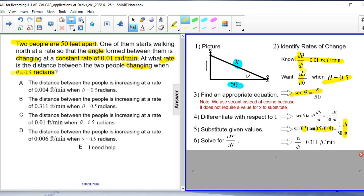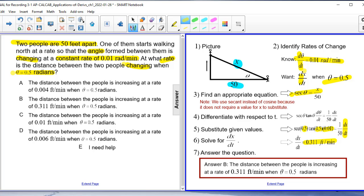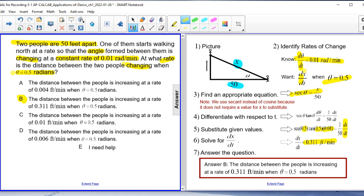When we solve for dx dt, we find out that dx dt is changing at a rate of 0.311 feet per minute. Now don't forget to answer your question as a complete sentence. So the distance between the people is increasing at a rate of 0.311 feet per minute when theta is equal to 0.5 radians. The correct answer is B.